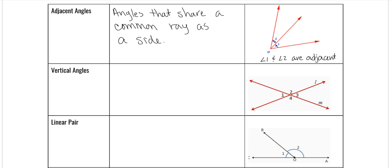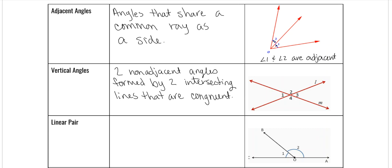Vertical angles are two non-adjacent angles — in other words, two angles that are not next to each other. They are formed by two intersecting lines, and they are also congruent. In this picture, this angle and this angle are vertical, and they kind of make a bow tie. Some people call these bow tie angles, but their real name is vertical angles. So one and three are going to be congruent, and two and four will also be congruent.